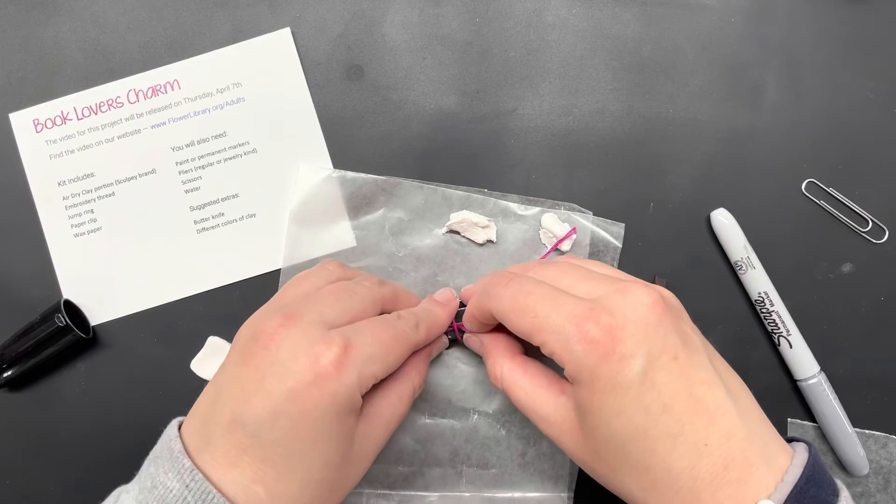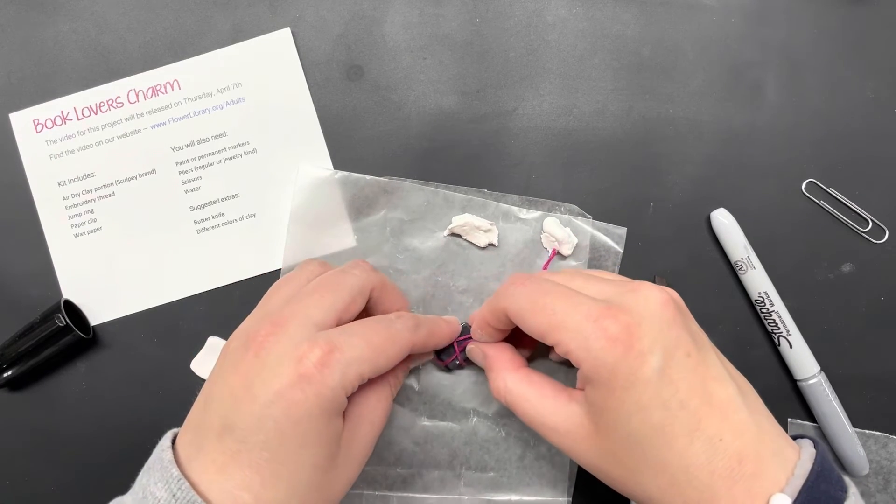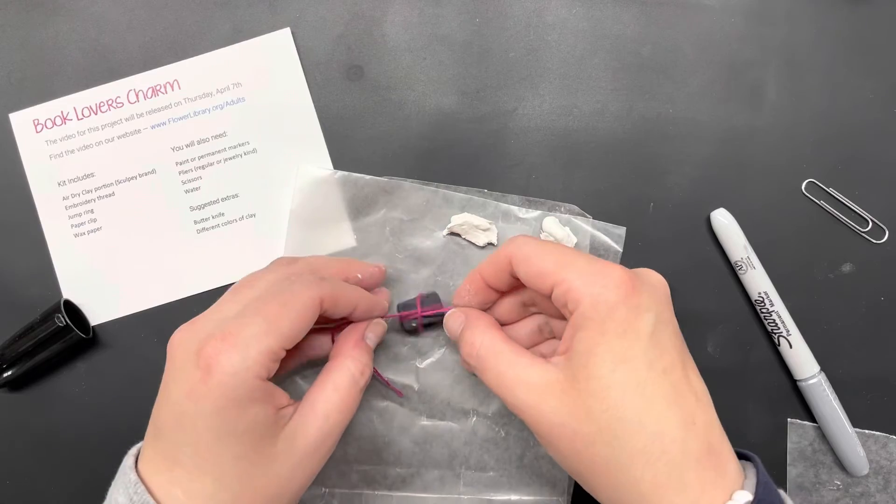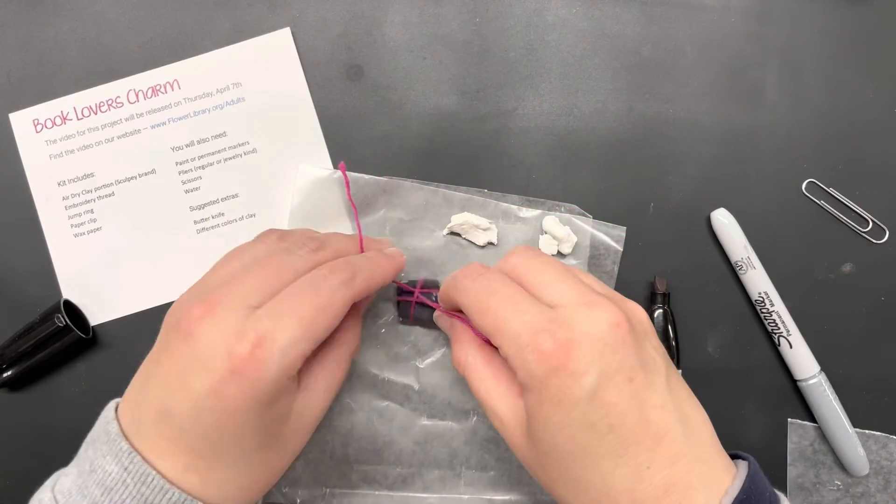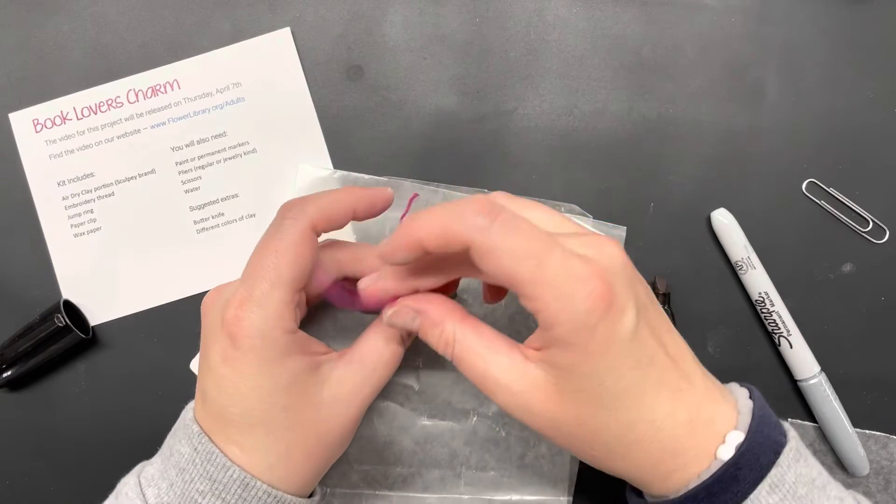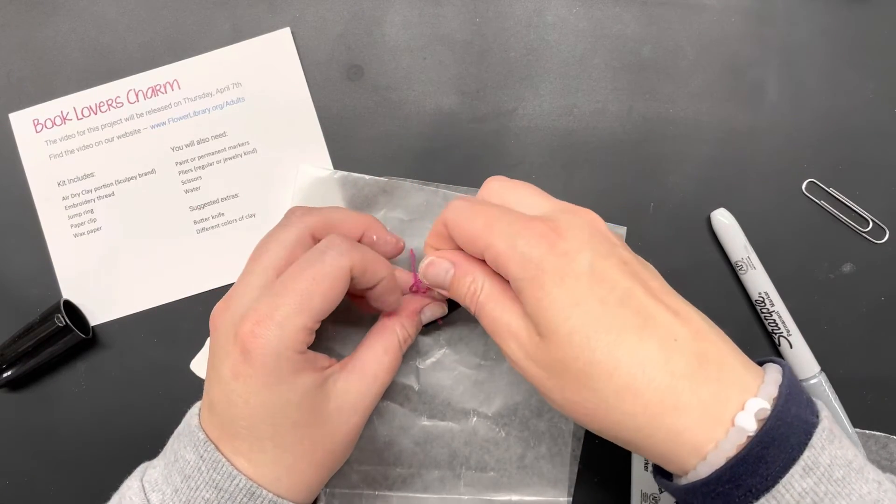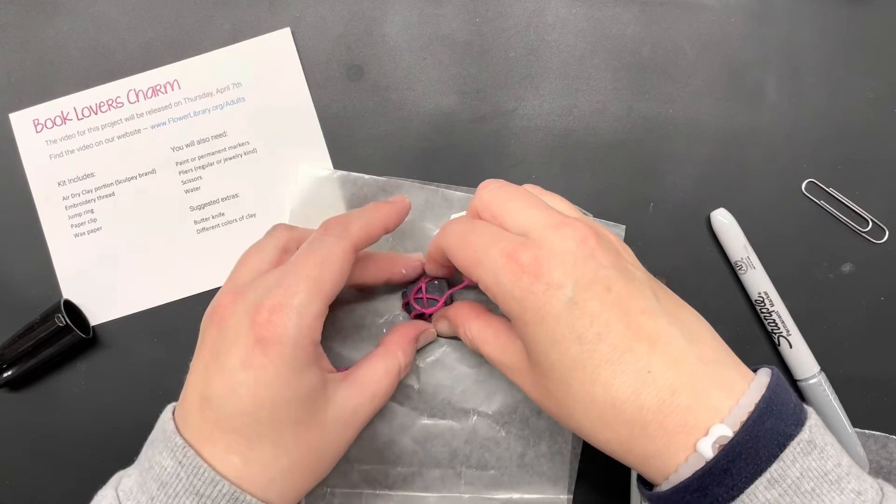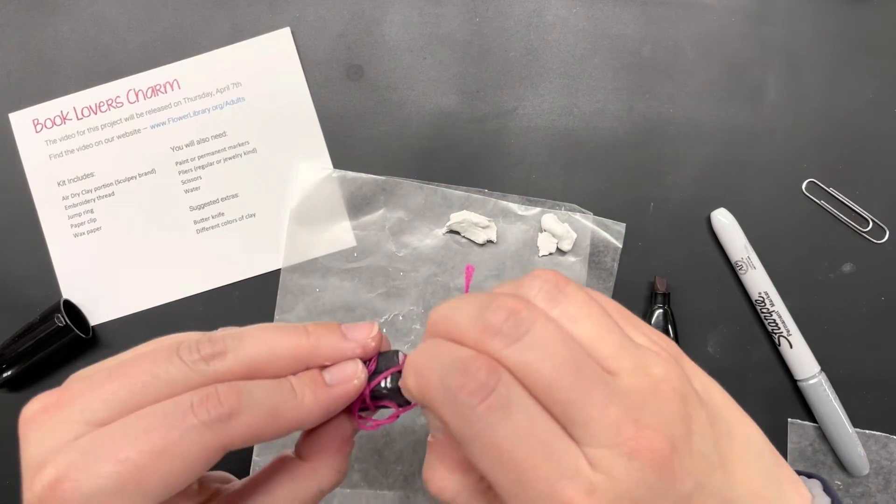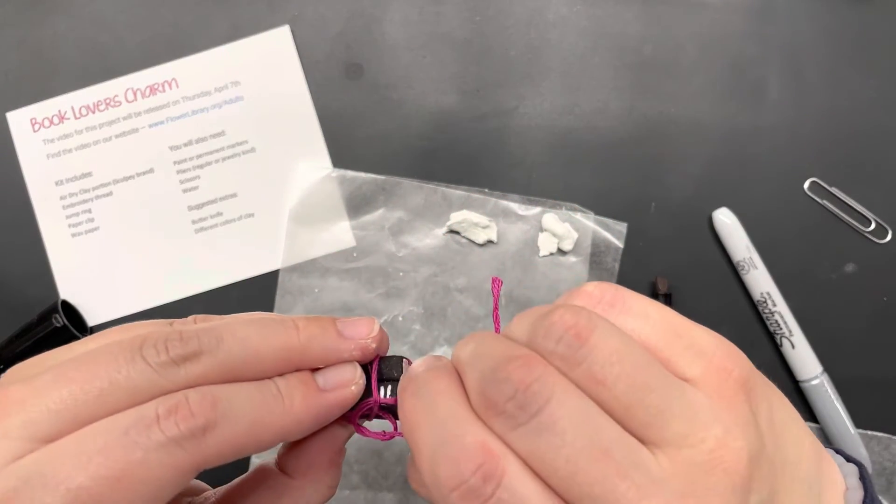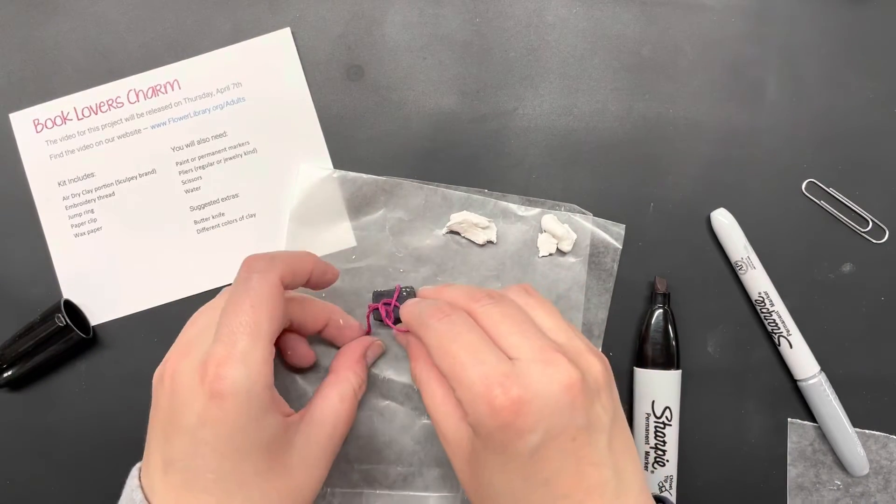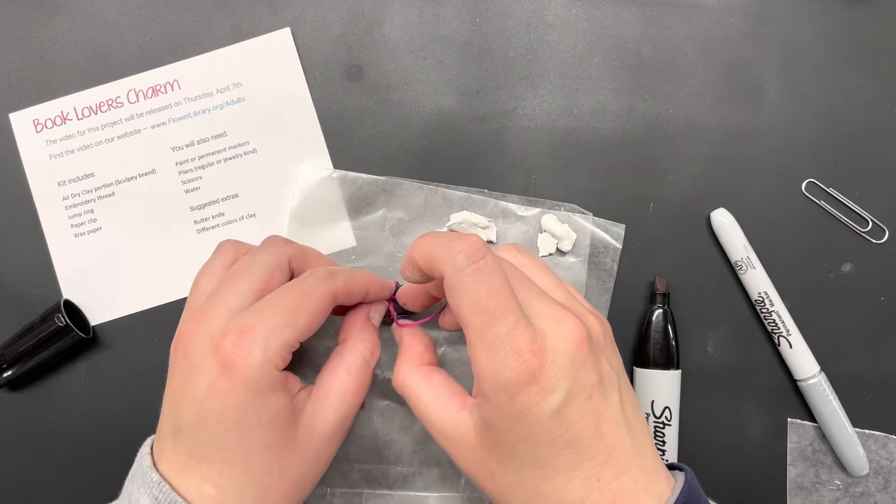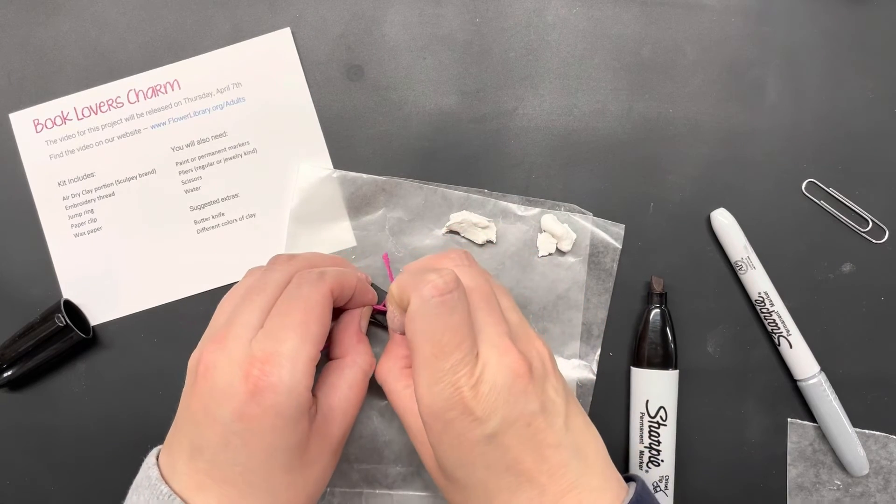Now that they are crossed through, I'm just going to tie a little knot. The string is going to want to move. Just make sure you have a string across all four sides of your book.